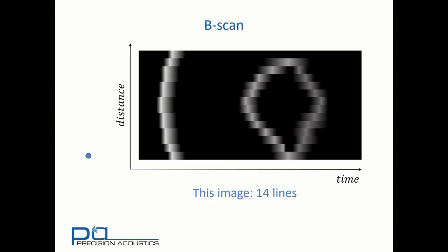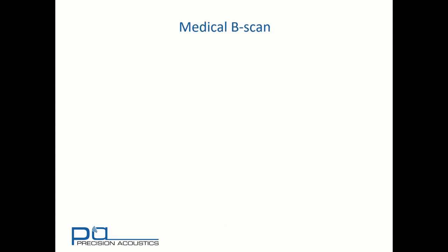It's important to realize that this image has only 14 lines, whereas if we're looking at a medical ultrasound scan, we could easily see greater than 128 lines. In fact, let's look at a medical B-scan image now.